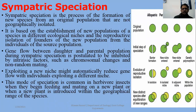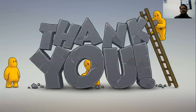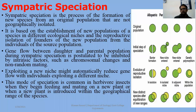Sympatric speciation is the process of formation of new species from an original population that are not geographically isolated. Within the population, if genetic polymorphism develops, a new group develops. Exploiting a new niche might automatically reduce gene flow within individuals. For example, maggot flies, which 200 years ago laid eggs and bred only on hawthorns, now lay eggs on both hawthorns and domestic apples — showing that genetic variation within the same population can also lead to speciation.